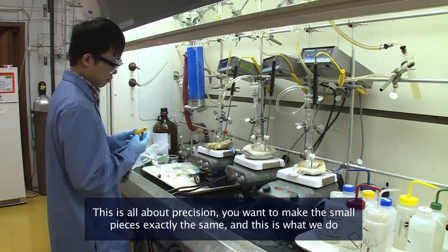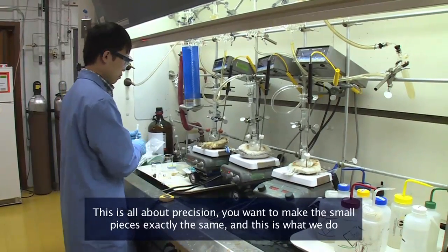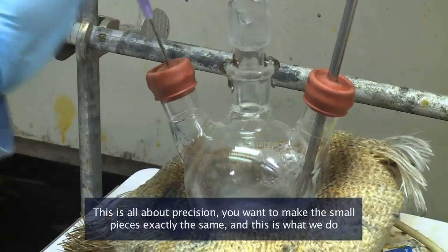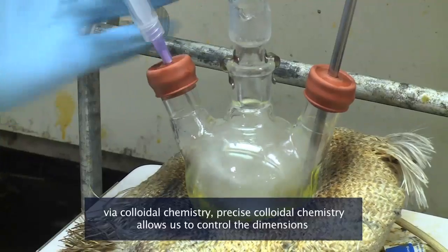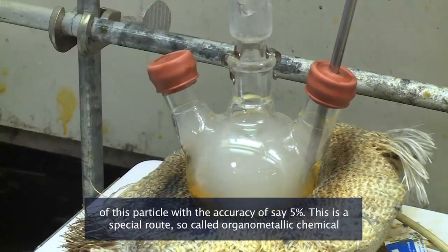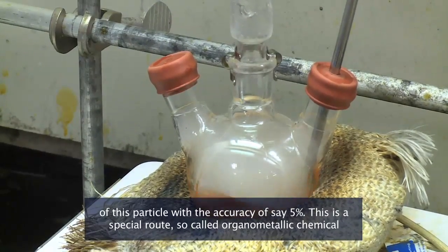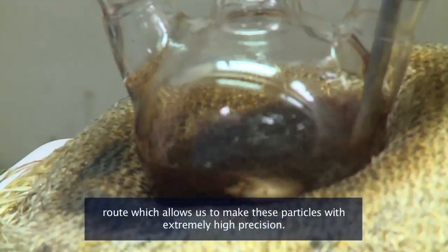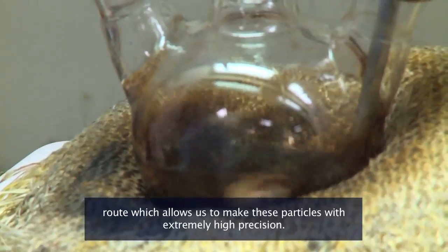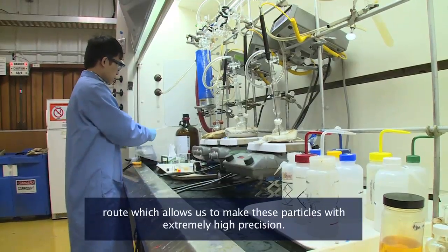This is all about precision. You want to make the small pieces exactly the same, and this is what we do via colloidal chemistry. Precise colloidal chemistry allows us to control the dimensions of this particle with the accuracy of say 5%. This is a special route, so-called organometallic chemical route, which allows us to make these particles with extremely high precision.